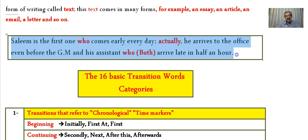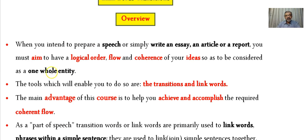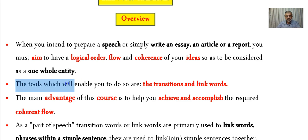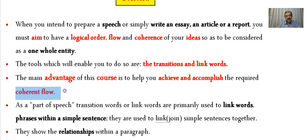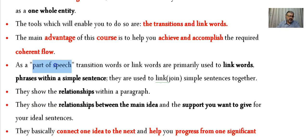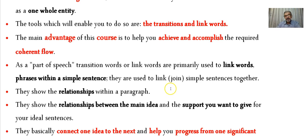The more elaborate form is clearly superior. You want your sentences, your speech, your writing — regardless of the type — to be considered as one whole entity. The tools that enable you to do so are transitions and link words. The main advantage of this course is to help you achieve the required coherent flow. Transitions are parts of speech — among the most important ones — primarily used to link words, phrases, or sentences within or between sentences.